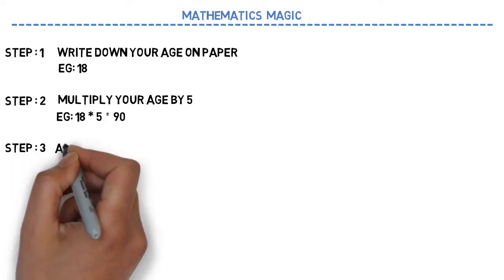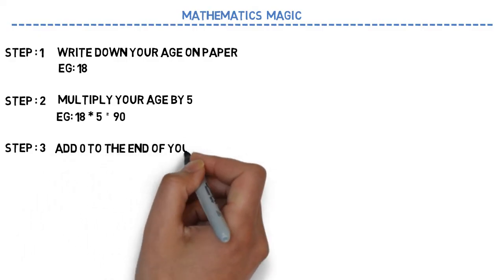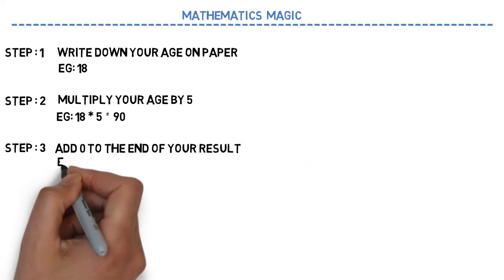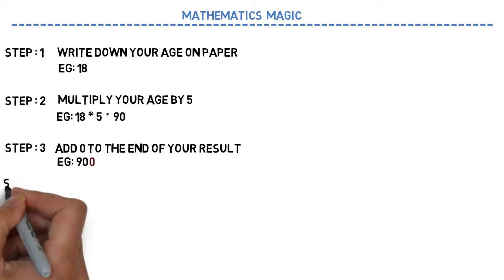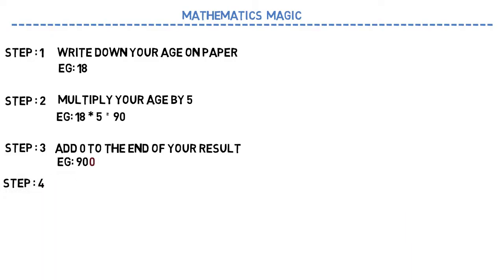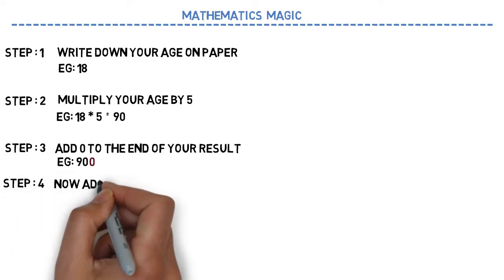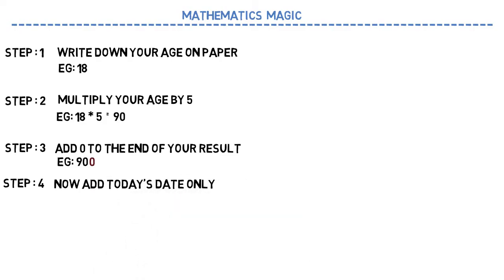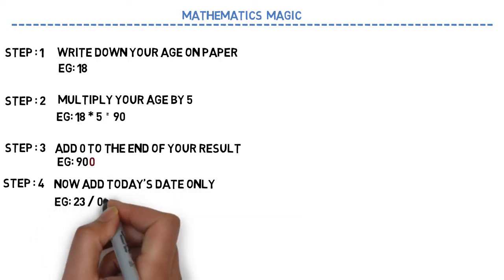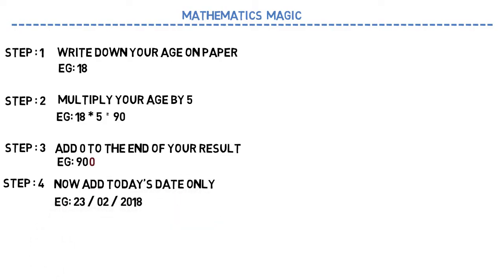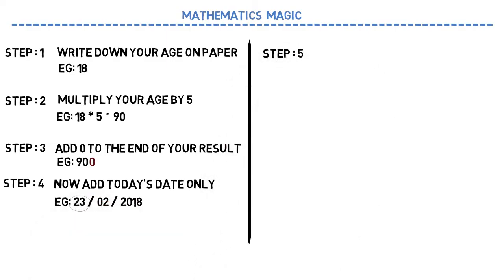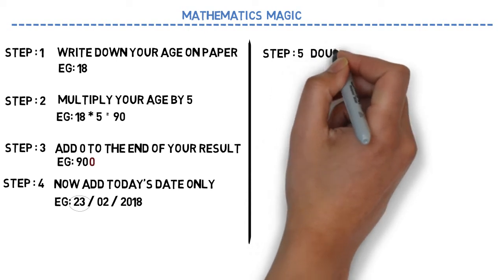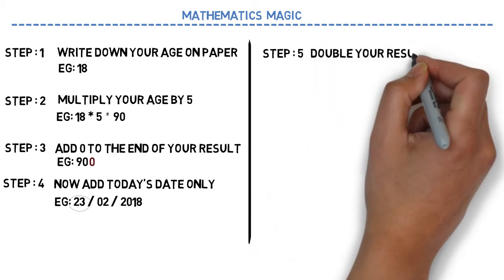In step 3, just add 0 at the end of your result, so your answer would be 900. Now add today's date. Let's say today's date is 23rd of February 2018 — in this case you need to add 23. In the next step, you need to double your result, that means multiply your result by 2.